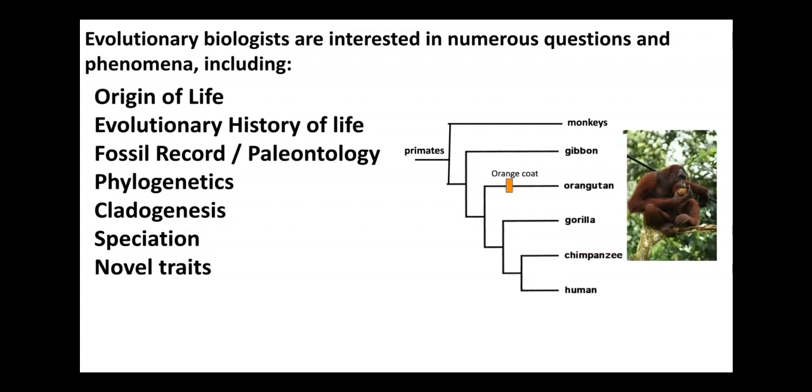Another consideration that many evolutionary biologists work on is: what is the origin of novel traits or novelties, phenotypes that are new to a group of organisms? Often we consider them as something that is typical or indicative of an organism, like the orange fur of an orangutan, or especially interesting are traits that allow organisms to survive better or do better than other organisms.